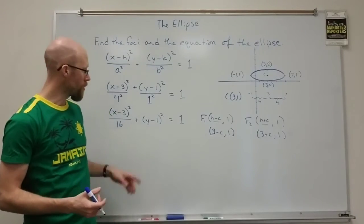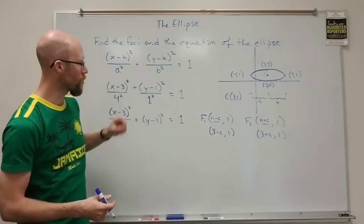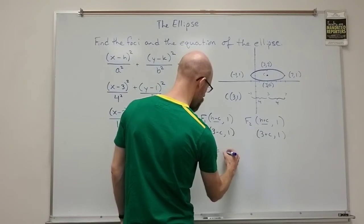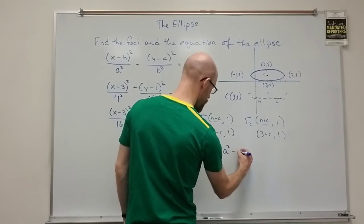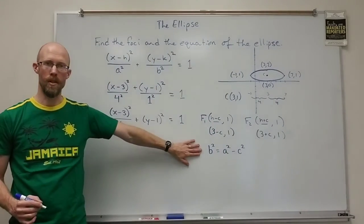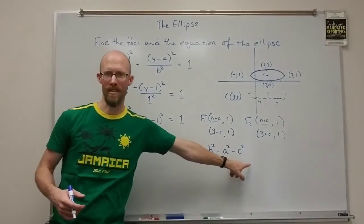And remember in this equation or in this equation the c value comes from the relationship that b squared equals a squared minus c squared. We can always set up this equation. I always think of it as the the word back BAC. It's not exactly but it helps me remember it anyway.